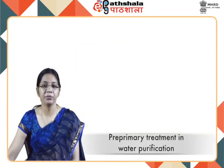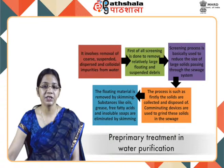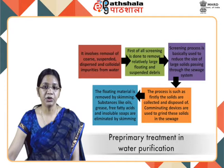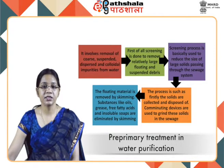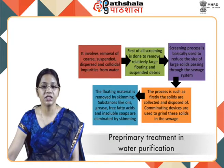Let us first discuss pre-primary treatment in water purification. It involves removal of coarse suspended debris. First of all, screening is done to remove relatively large floating and suspended debris. The screening process is used to reduce the size of large solids passing through the sewage system. The solids are collected and disposed off. Comminuting devices are used to grind the solids. The floating material is then removed by skimming.